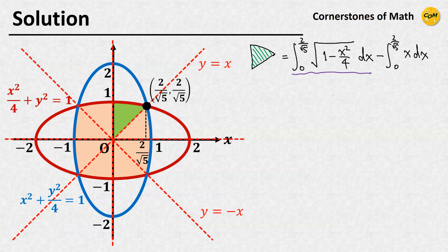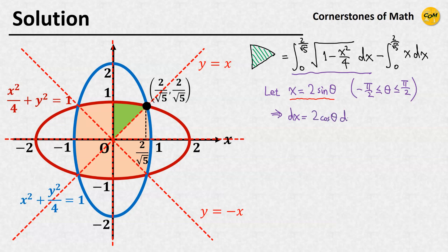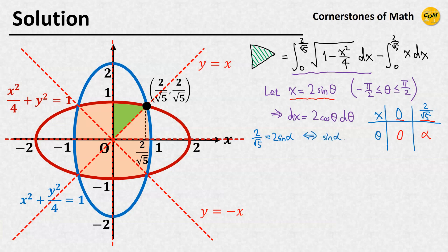For the first part, we use trigonometric substitution. We let x equals 2 sine theta, which gives dx equals 2 cosine theta d theta. When x equals 0, theta equals 0. And when x equals 2 over square root of 5, we let theta equal alpha, which means 2 over square root of 5 equals 2 sine alpha, or sine alpha equals 1 over square root of 5.